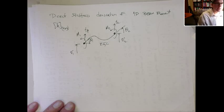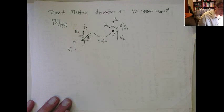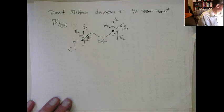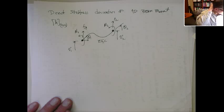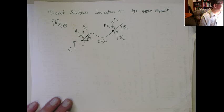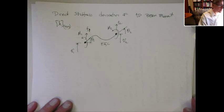And we assume that the beam has an E and an I and an L. So we know those things. The way we do this, this is kind of like a force method or a superposition method.